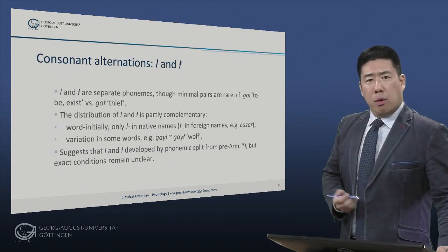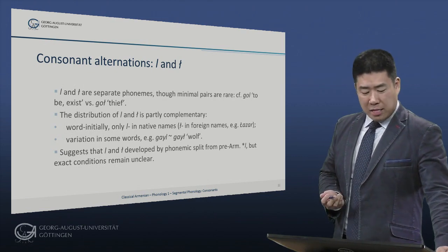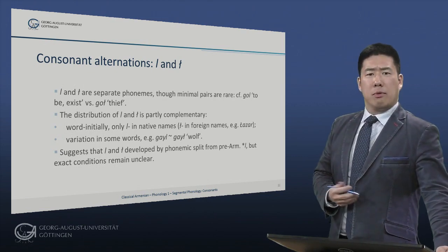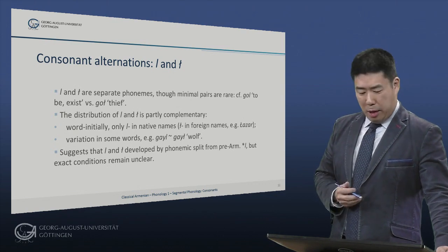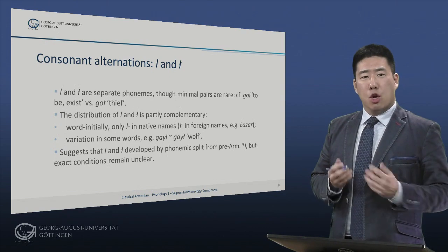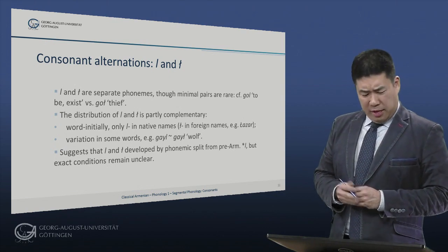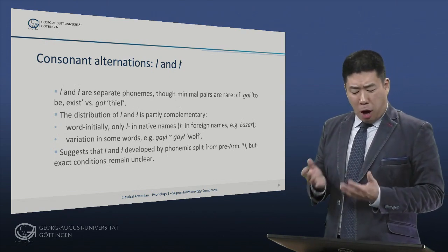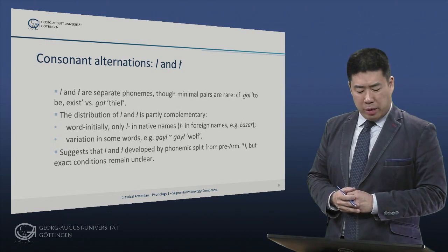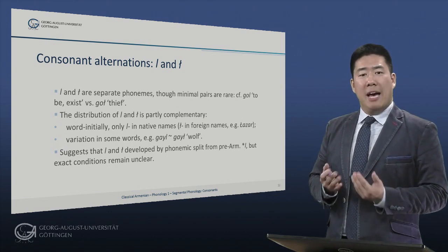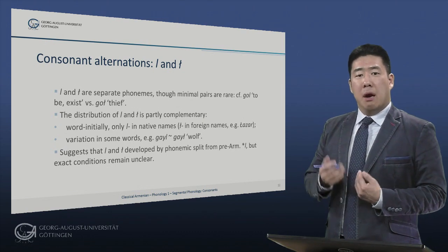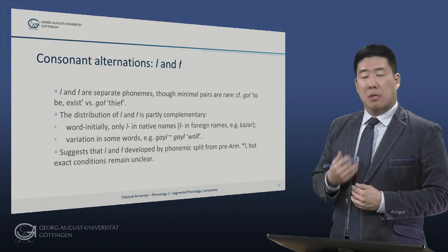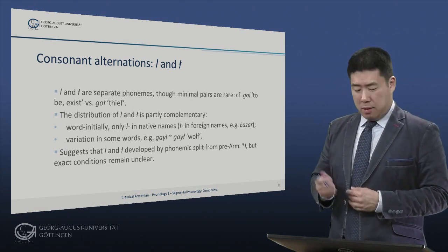Another important consonant alternation involves the two kinds of Ls. These two are separate phonemes, though minimal pairs are rare. Compare 'gol', the infinitive of 'be' or 'exist', and 'gol' meaning thief. The distribution of these two sounds is partly complementary. Word initially, we have only L in native names. In foreign names, you do find the velarized L — for example, in Lazar.